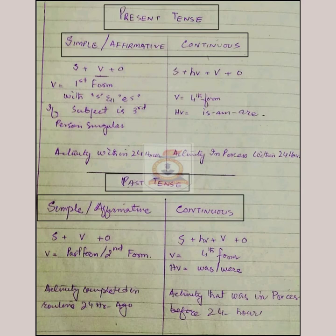We use the second form of the verb in past simple. As for the difference between present continuous and past continuous, the only major difference lies in the helping verbs — we use is, am, are in present tense continuous, and was and were for past continuous. Was is for singular and were is for plural.